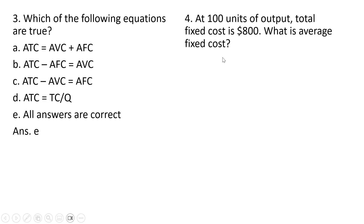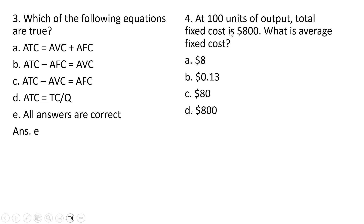Question four. At 100 units of output, total fixed cost is $800. What is average fixed cost? Average fixed cost is total fixed cost divided by the units of output, so 800 divided by 100 is $8. Answer choice A.